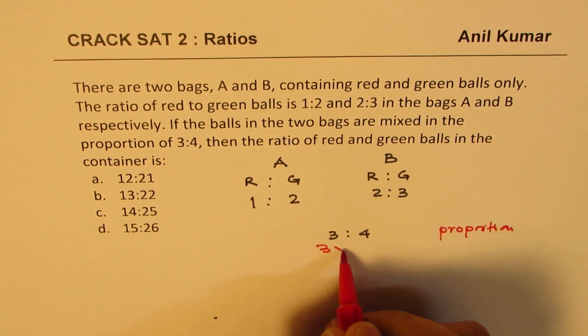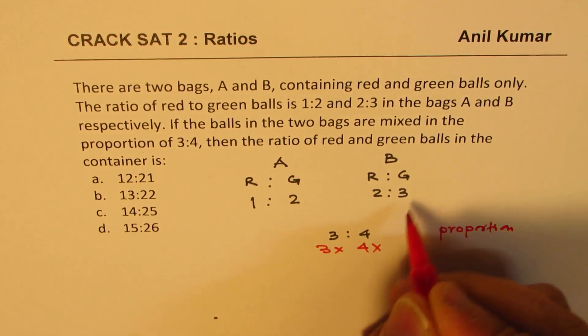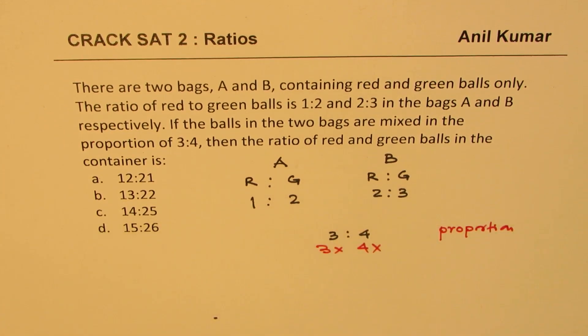So like 3x and 4x, we have to get the same quantities from both the ends. How do we get the same quantities?